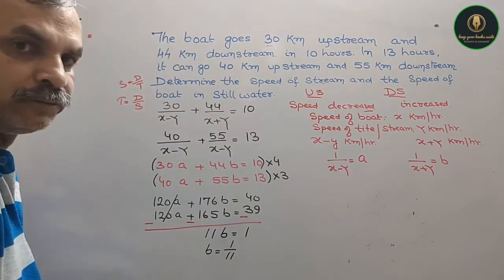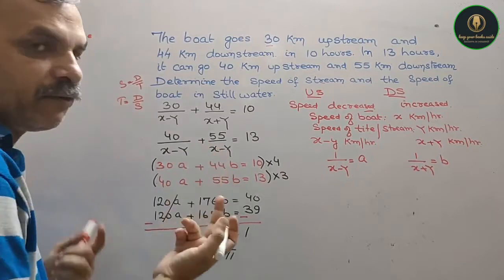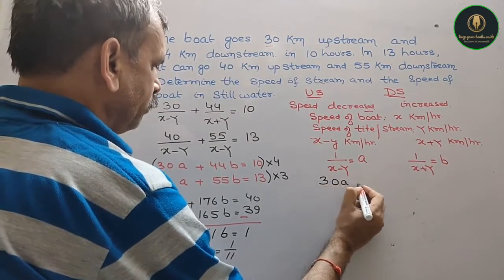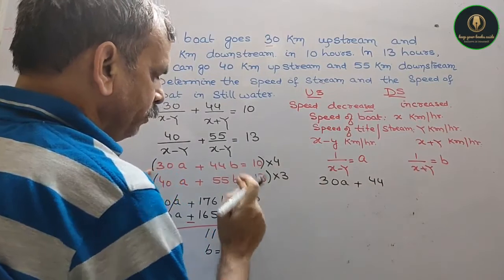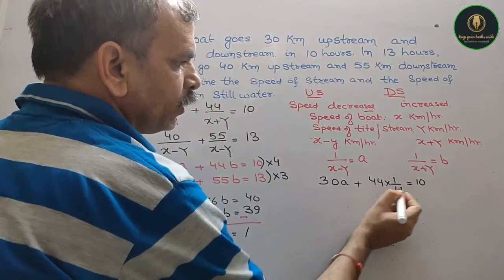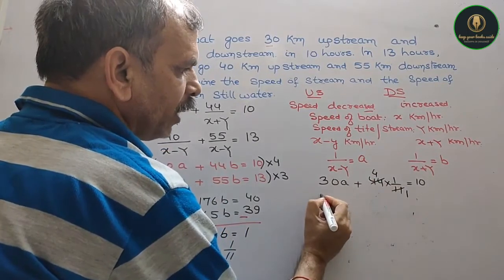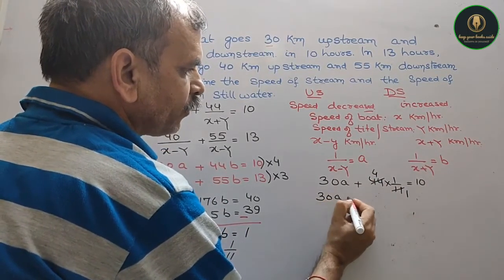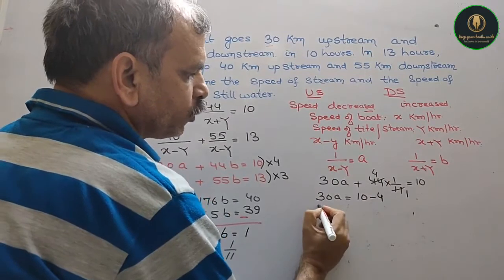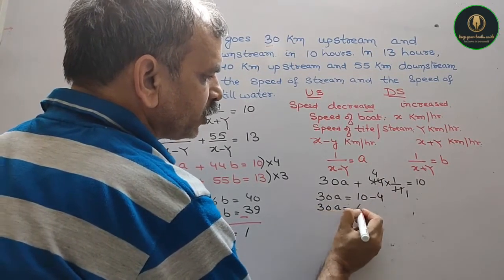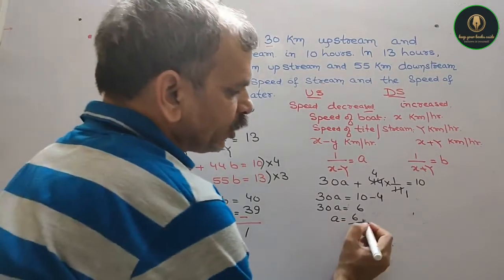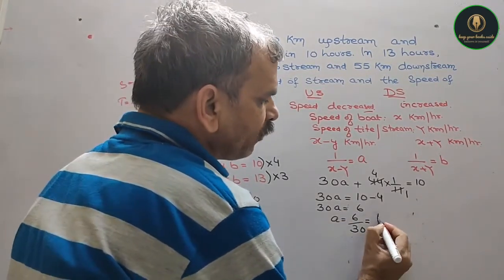Now to find a, substitute b equals 1/11 into the first equation: 30a plus 44 times (1/11) equals 10. The 44/11 simplifies to 4, so 30a equals 10 minus 4, which gives 30a equals 6, so a equals 6/30, which simplifies to 1/5.